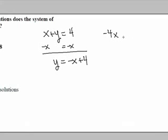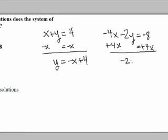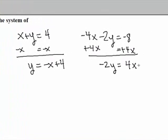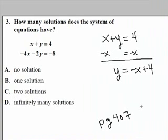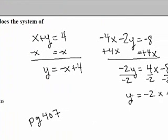For the second equation, add 4x to both sides to get negative 2y equals 4x minus 8, then divide every term by negative 2 to get y equals negative 2x plus 4. Go to page 407 in your e-book — there's a chart on that page. If you identify the slope and the y-intercept of both equations, you should be able to determine how many solutions the system has. Refer to your e-book, page 407, and you'll find the answer.